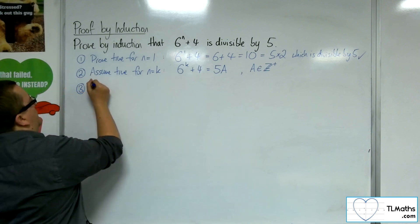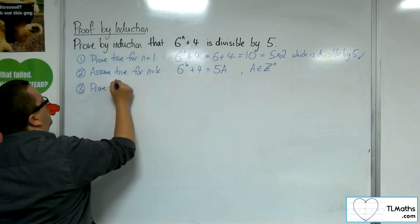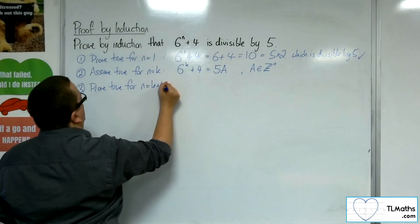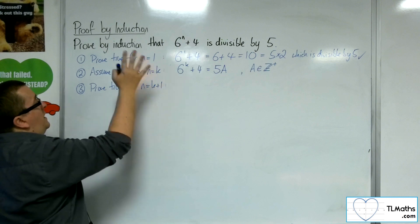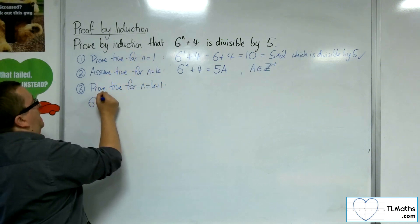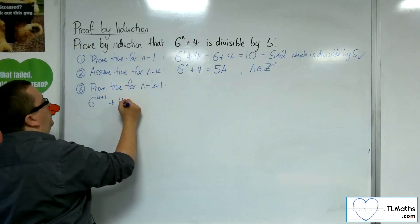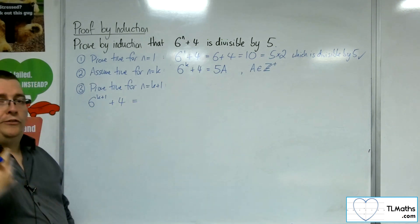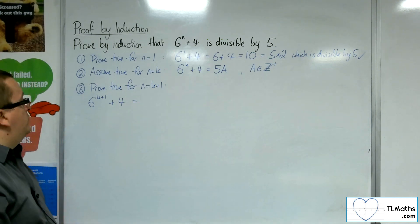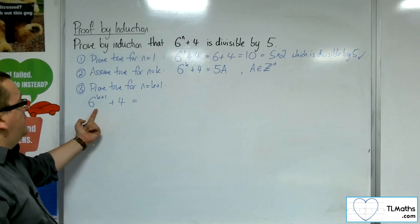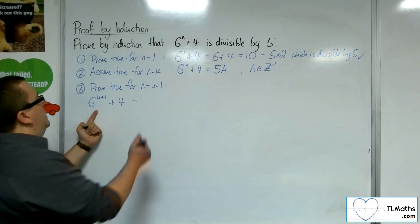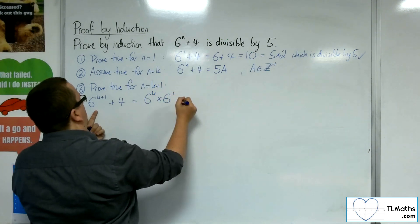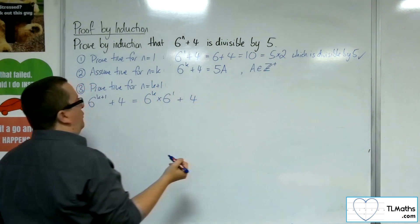Step number 3: we need to prove that it's true for n equals k plus 1. So substituting n for k plus 1, we get 6 to the k plus 1, plus 4. Following the same methodology as the previous video, I'm going to use index laws to split that apart — so that's 6 to the k times 6 to the 1, and then we've still got that plus 4 on the end.